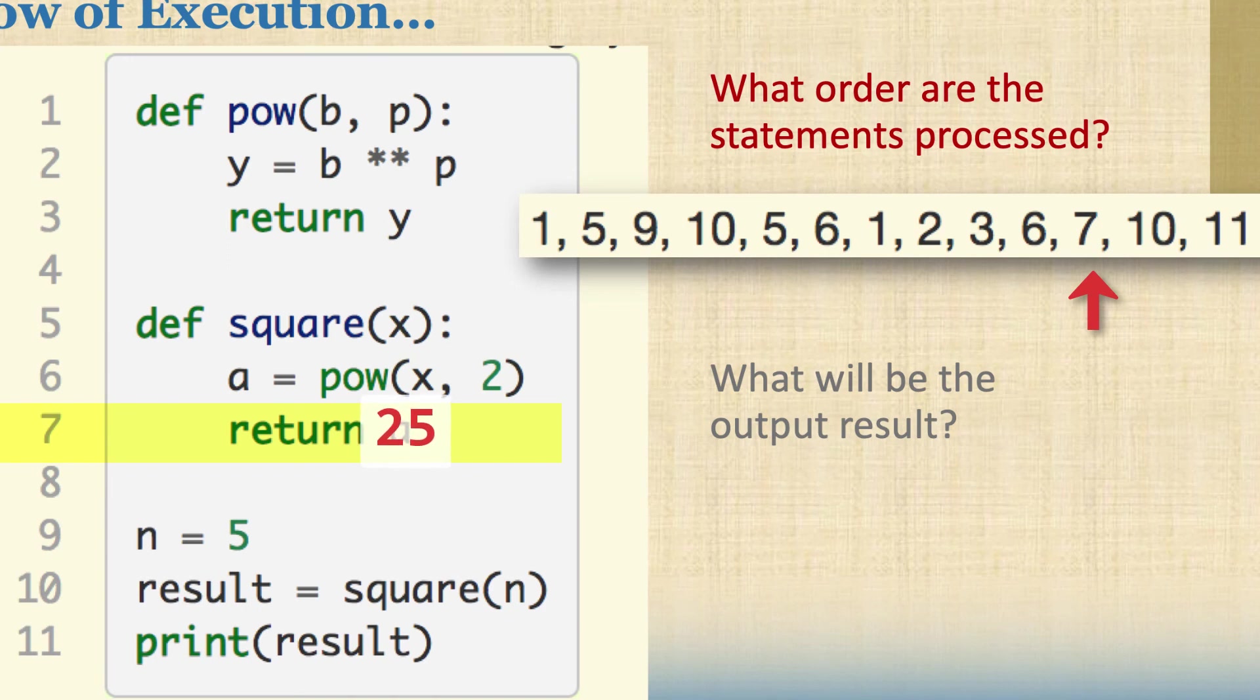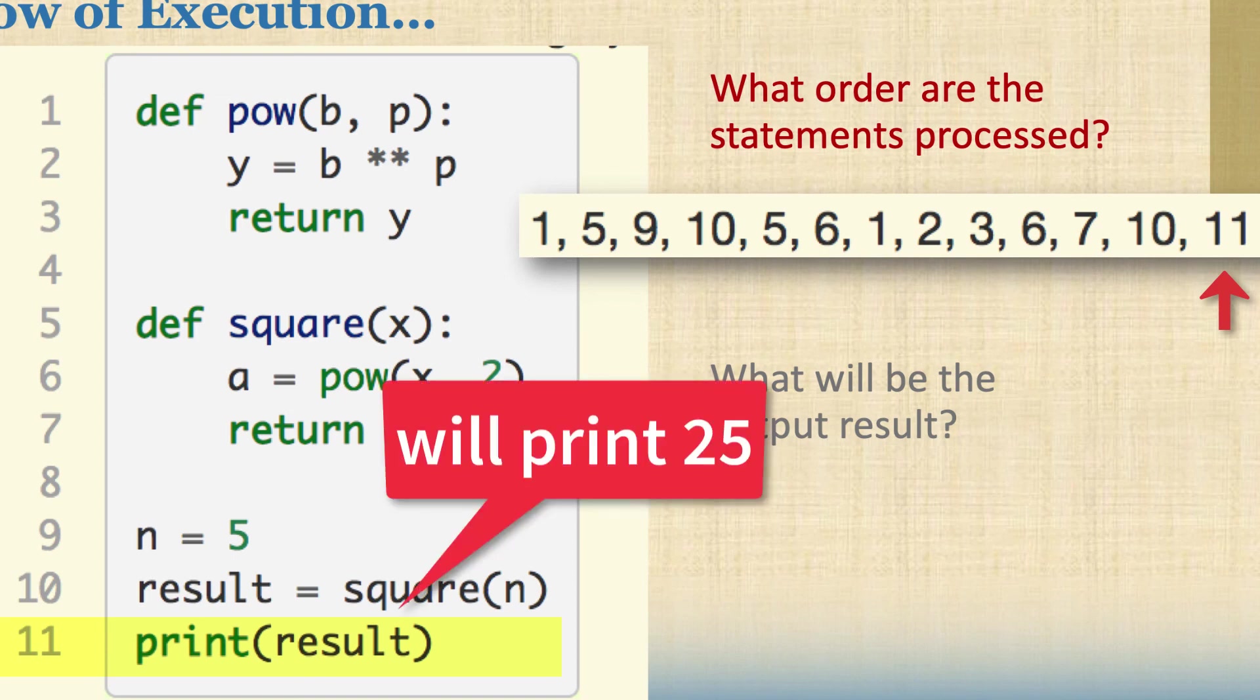And then we're going to go back to line 10 and say okay now we have this thing figured out. The result of all this, the square with the power function inside, is going to be 25 and then let's print it out at line 11. So it goes through this whole series of steps here because there's a function inside of a function.